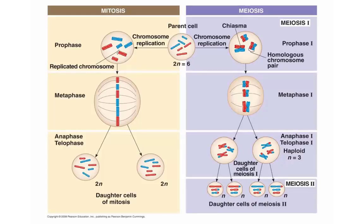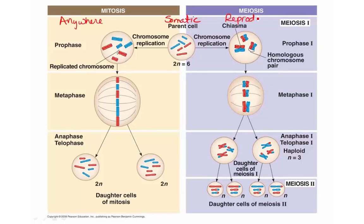If we compare and contrast mitosis and meiosis — an important part of the next test — in both cases we are going to start with a parent cell, which is ultimately a somatic cell. The location of this somatic cell will vary: if it is mitosis, this somatic cell could be anywhere inside our bodies; if it is meiosis, it is going to be in the reproductive tissues. Additionally, this parent cell, regardless of the process, will go through an initial interphase during which it will replicate all of the chromosomes, meaning the sister chromatids will be genetically identical to each other at the beginning of both mitosis and meiosis.